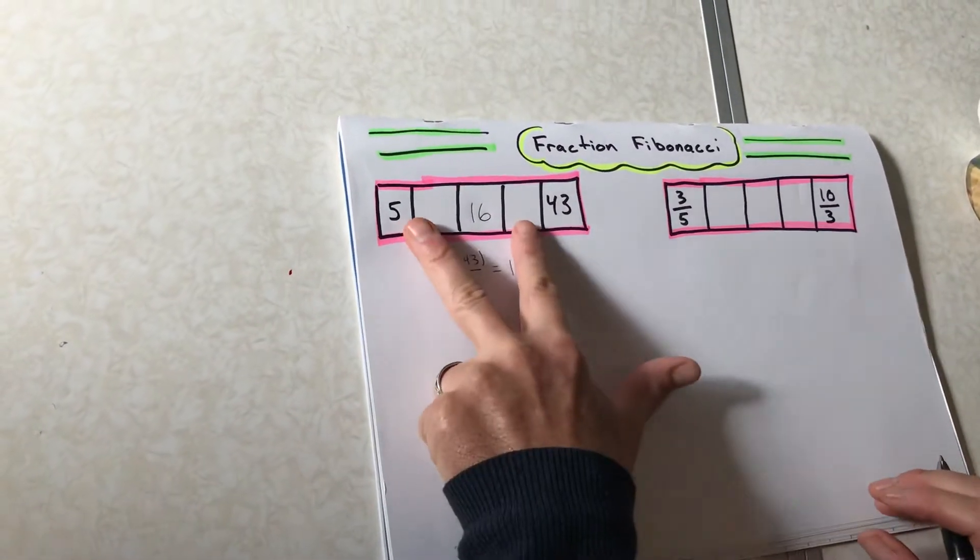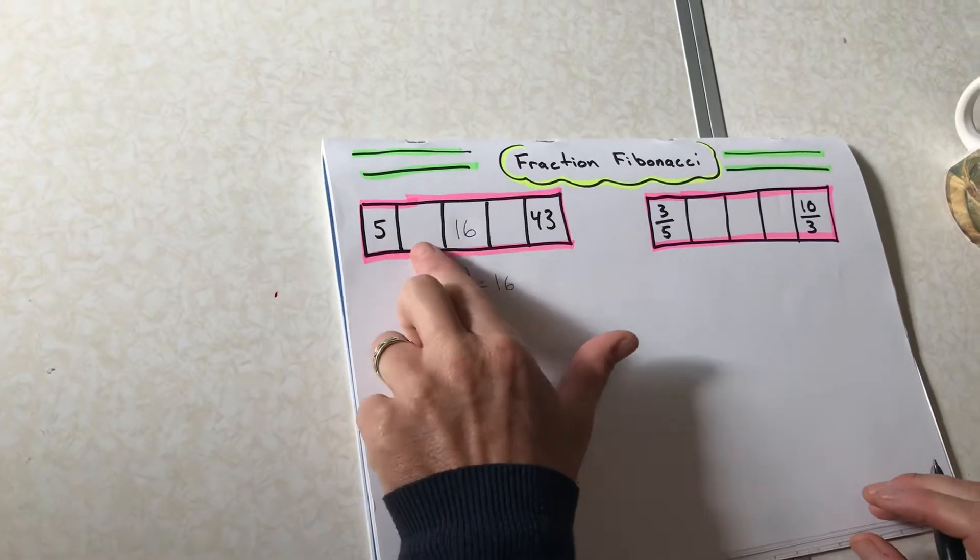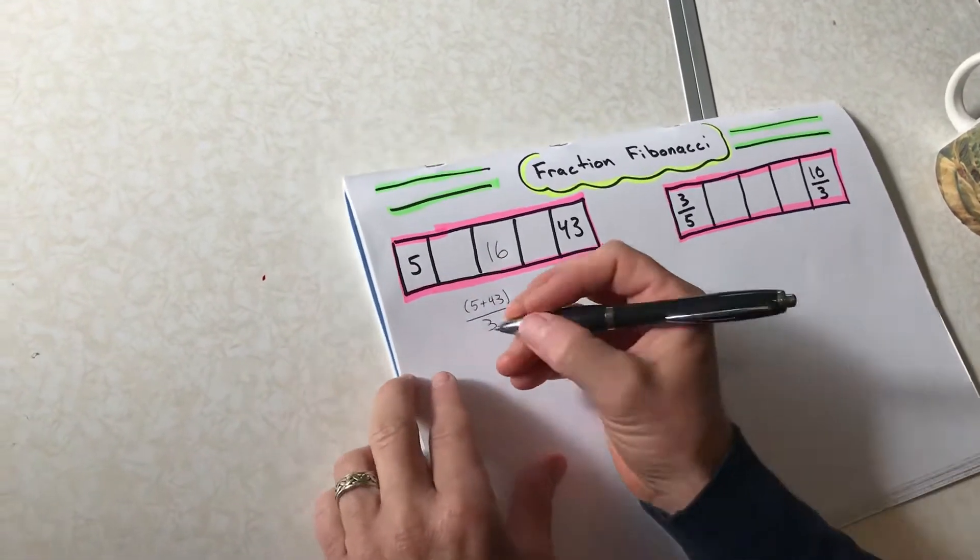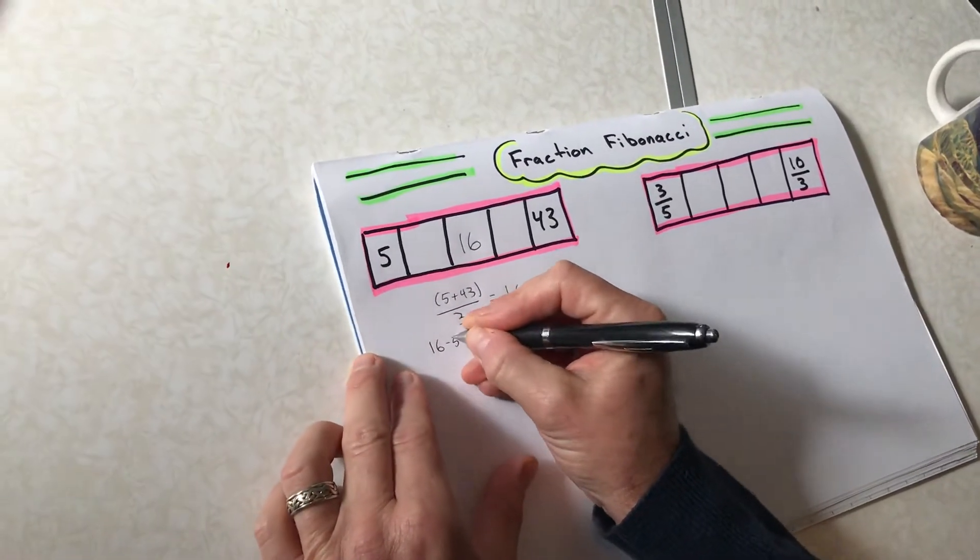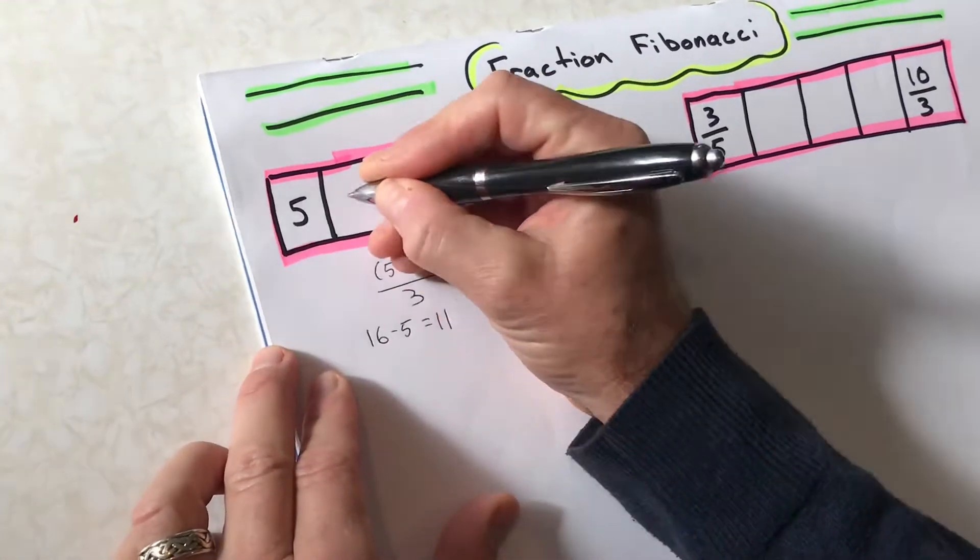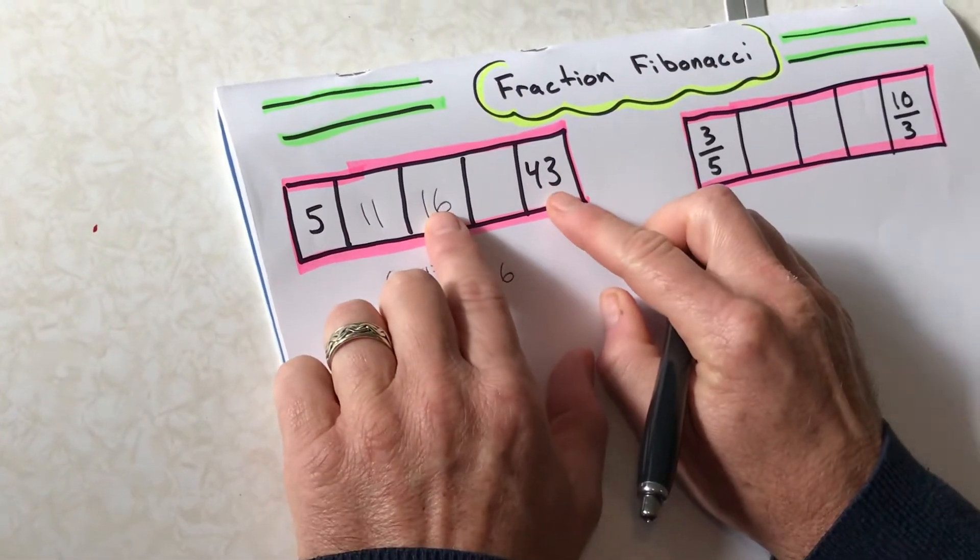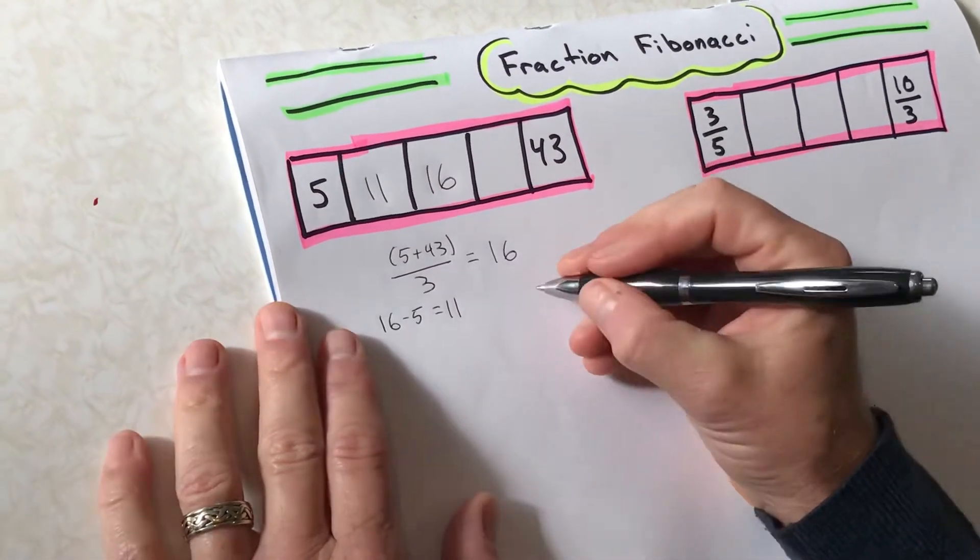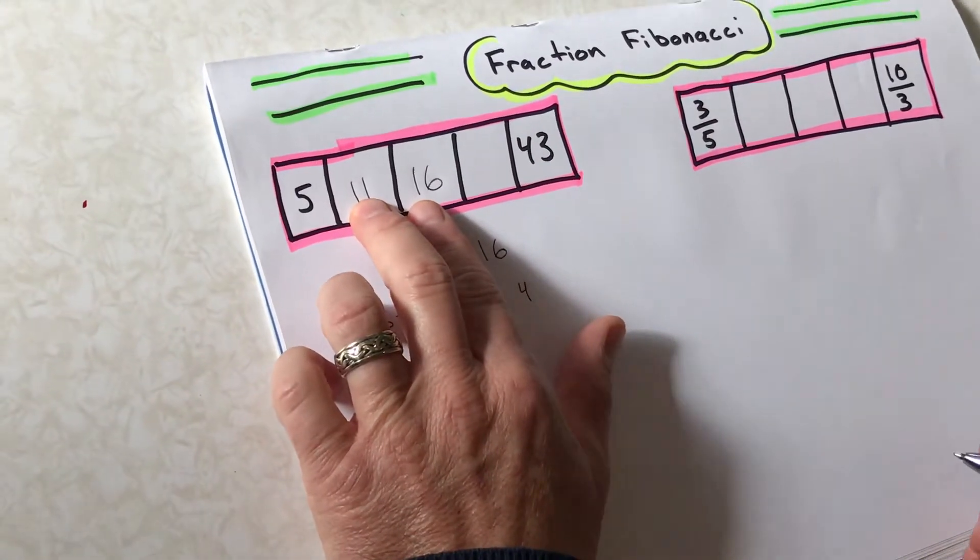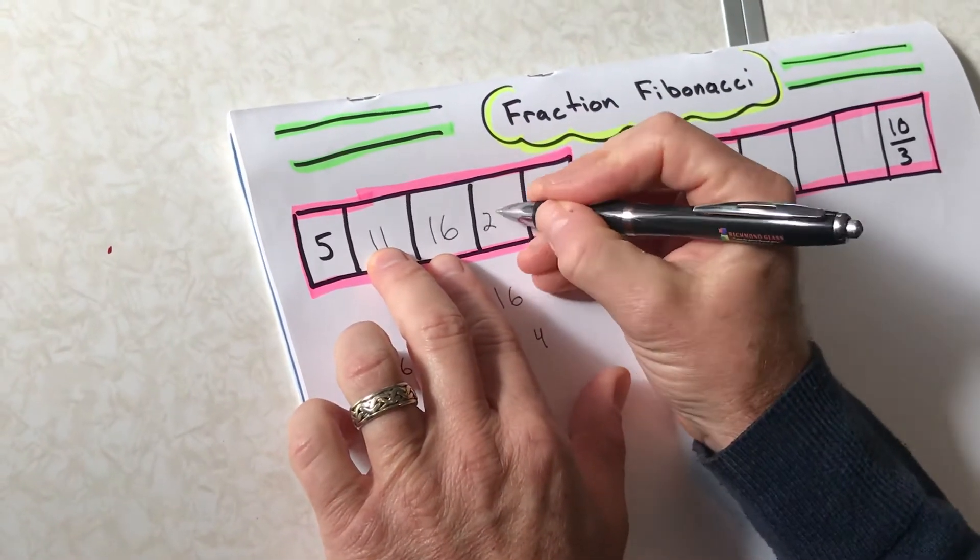And then from here, it's pretty easy to get these two. Because that middle number is just gonna be 16 minus five. 16 minus five gives me 11. And that's gonna be 43 minus 16. Or just 11 plus 16, I guess we could do it that way, 27. That's easier.